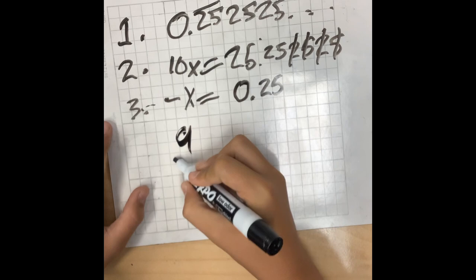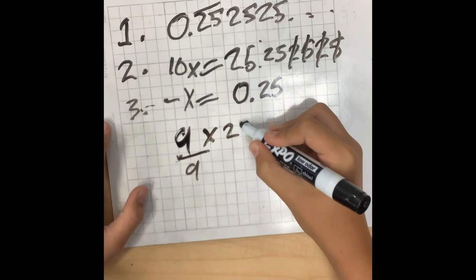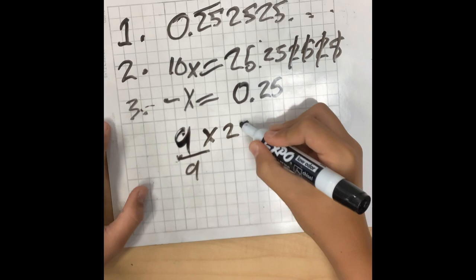Last, you do 9 times 2.5 over 9. That becomes 25 over 99, and the answer is 25 over 99.